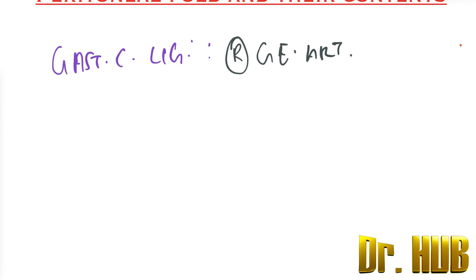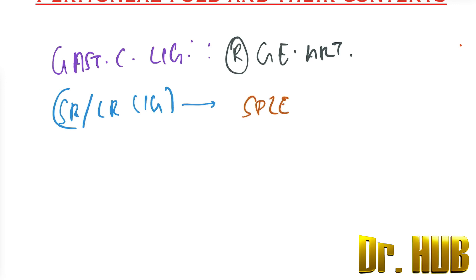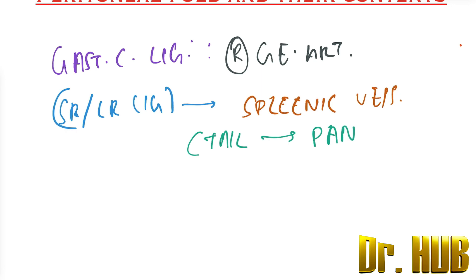Then we move on to the splenorenal and lienorenal ligament. This involves the splenic vessels, and it also contains the tail of the pancreas.